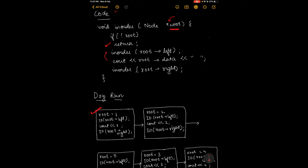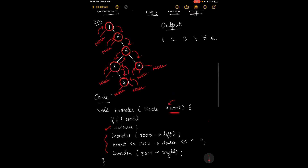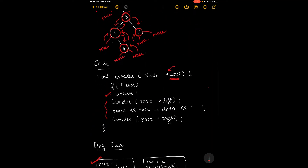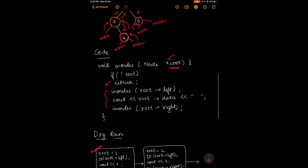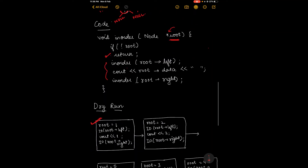Resuming, cout root data: root data 1 will be printed. Next, we move on to in-order root right, so the right child of 1 will be passed into the function. The right child of 1 is 2.